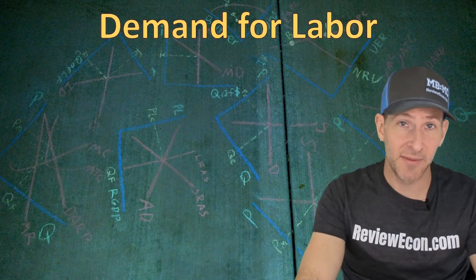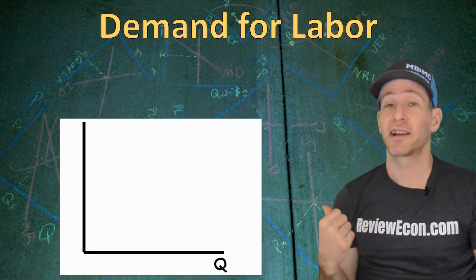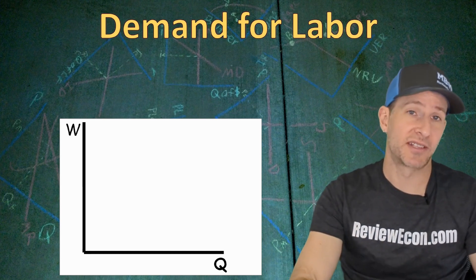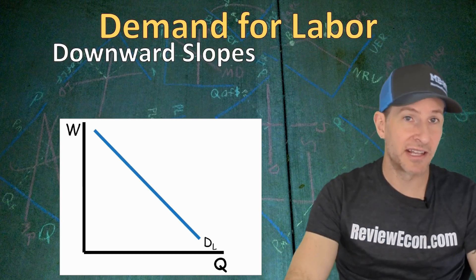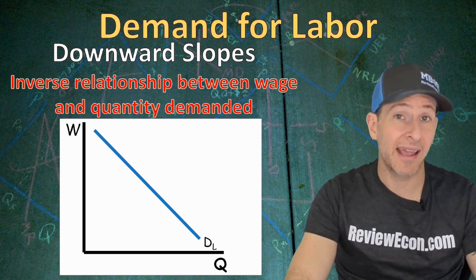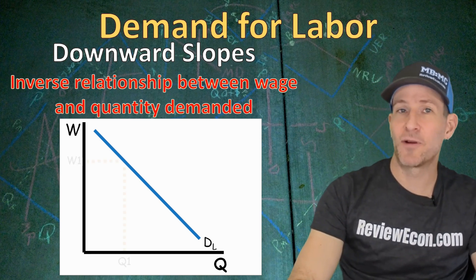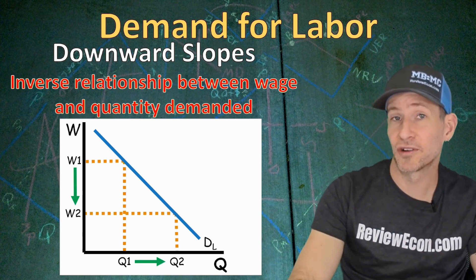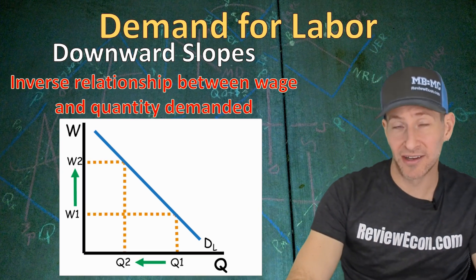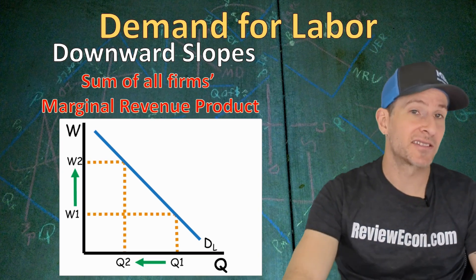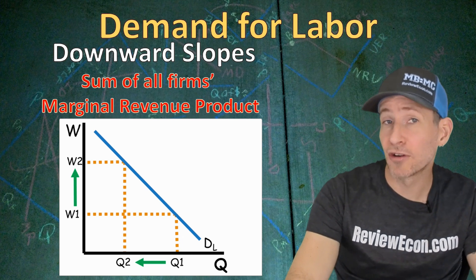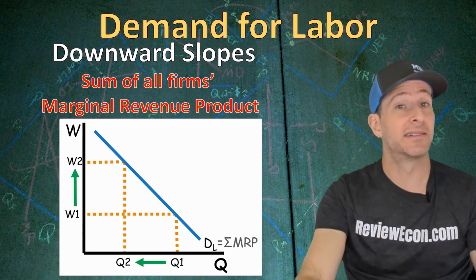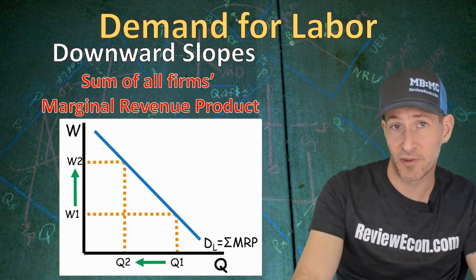When graphing the demand for labor for an entire market, we have quantity on the x-axis and the wage on the y-axis, because the wage is the price of labor. The demand for labor is downward sloping because there is an inverse relationship between the wage and the quantity of workers that businesses hire — at high wages, businesses hire few workers; at lower wages, businesses hire more. That demand curve is the sum of every firm's marginal revenue product curve, at least the downward sloping portion.